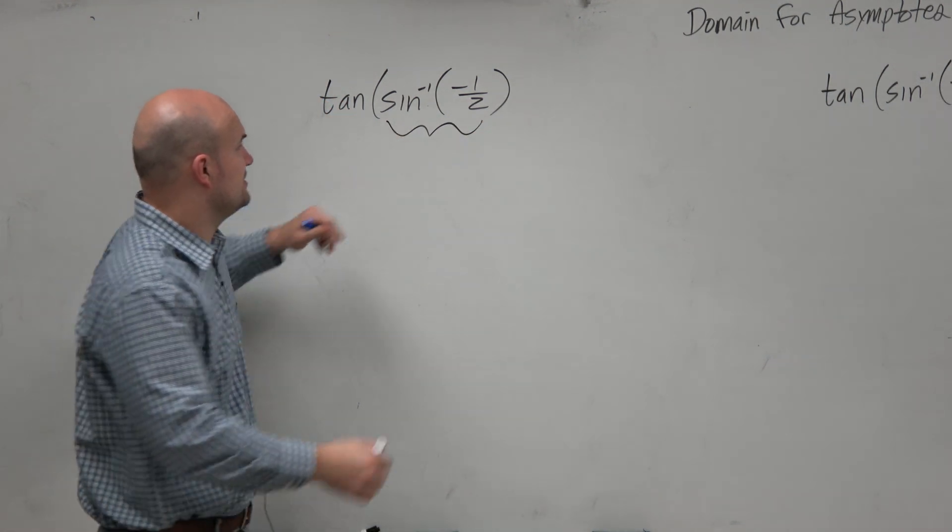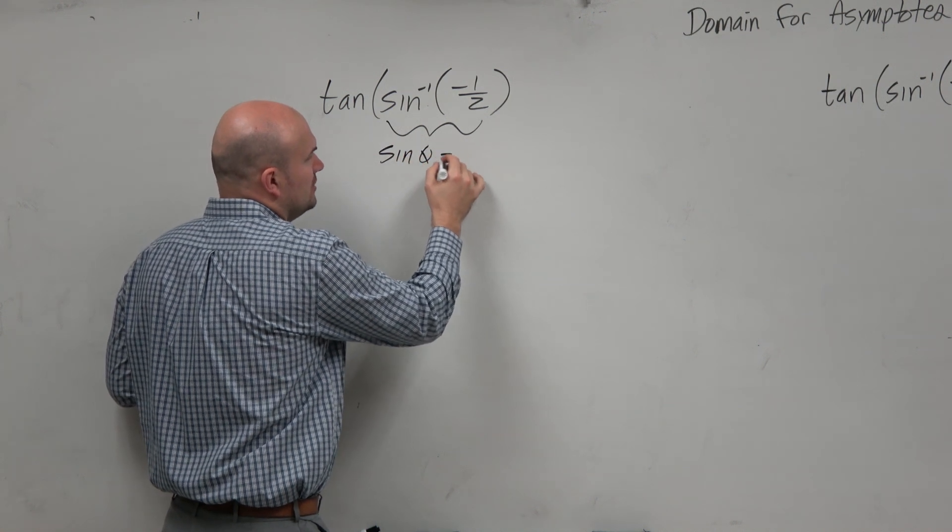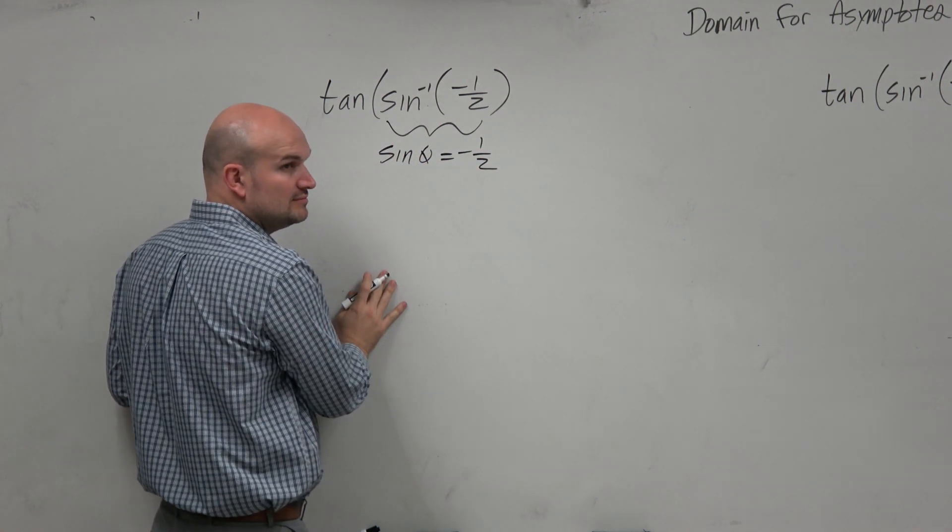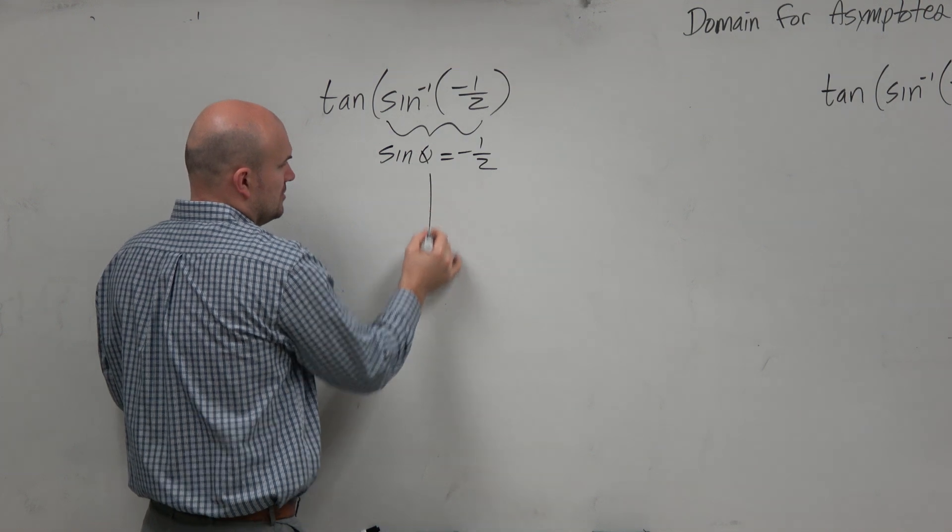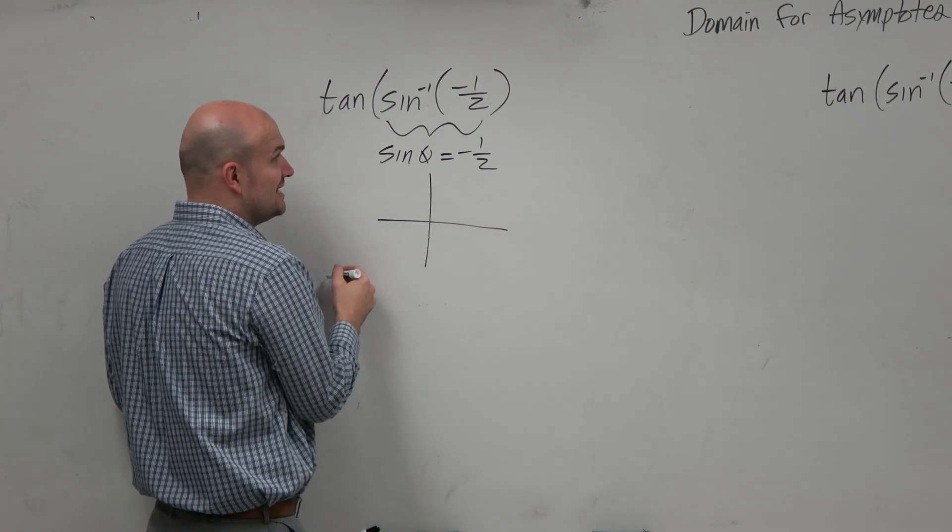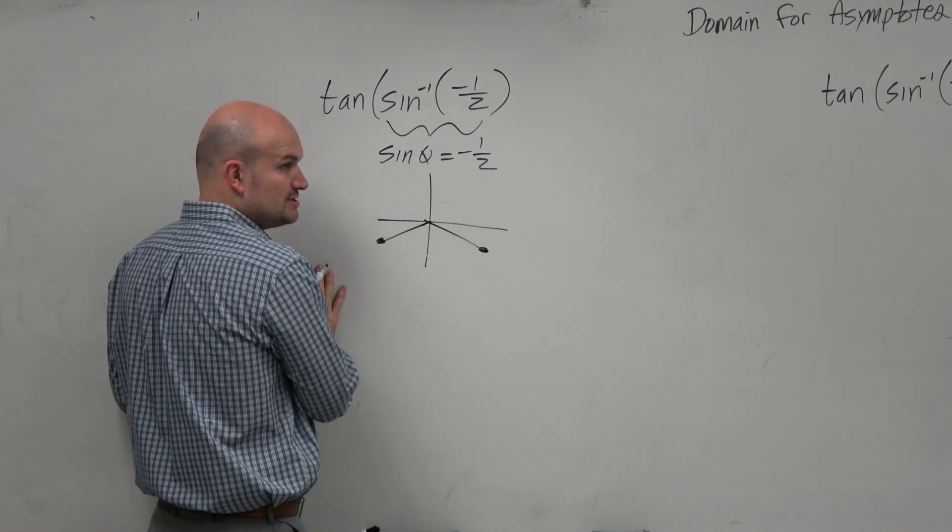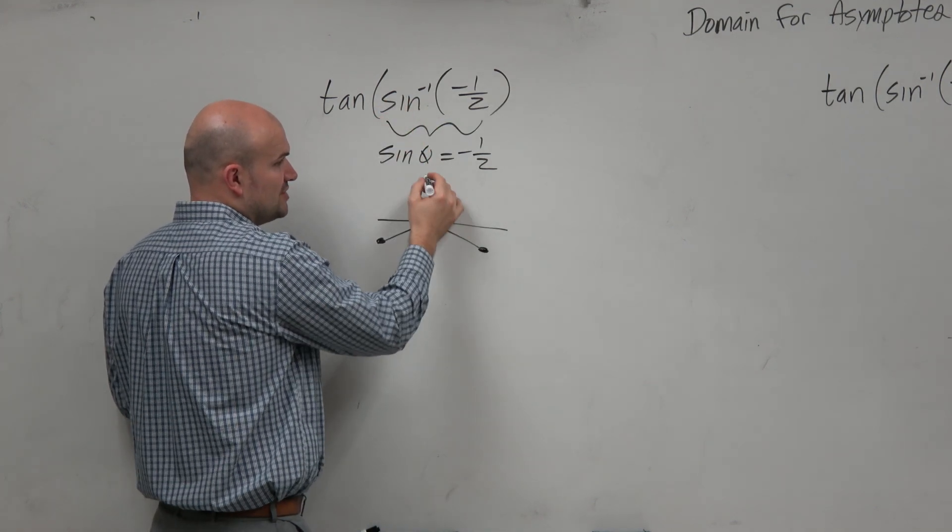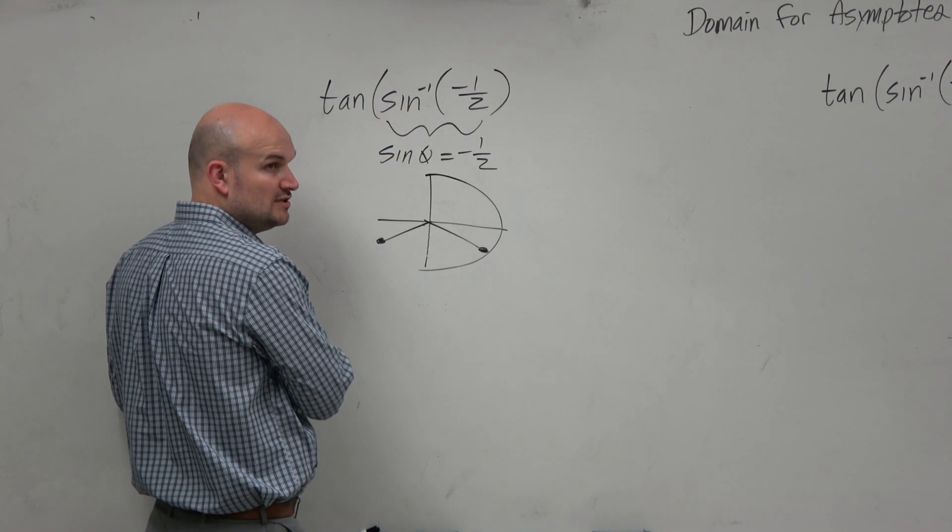Remember, this is asking us: the sine of what angle is equal to negative one-half? We know that if sine is negative, it has to be in the third or fourth quadrants. Since it's the sine inverse, it has to be restricted within the first and fourth quadrants.